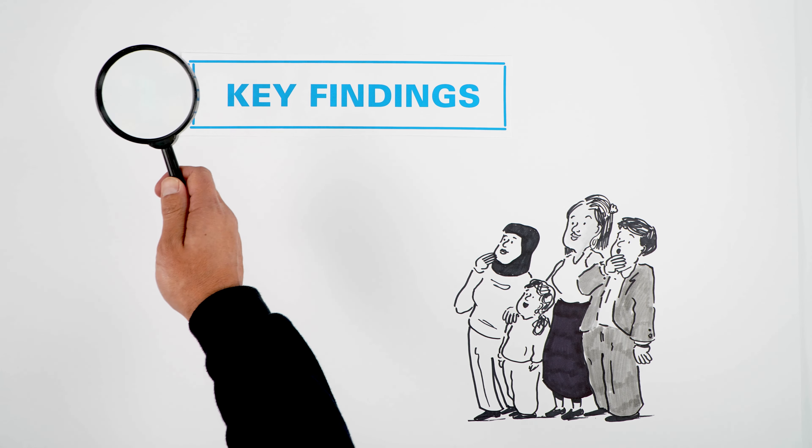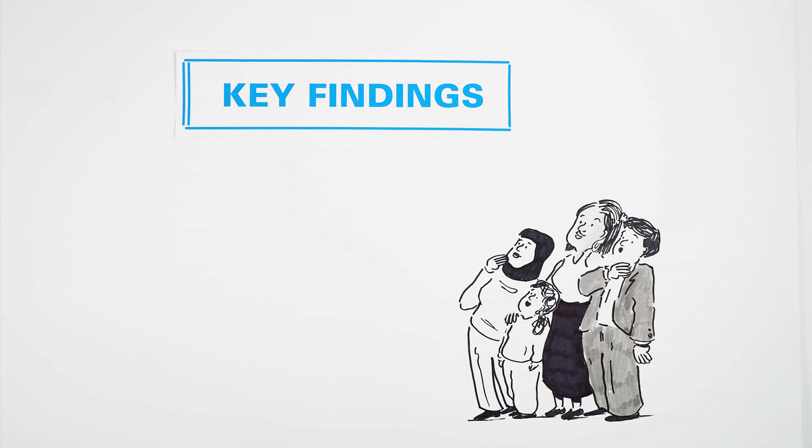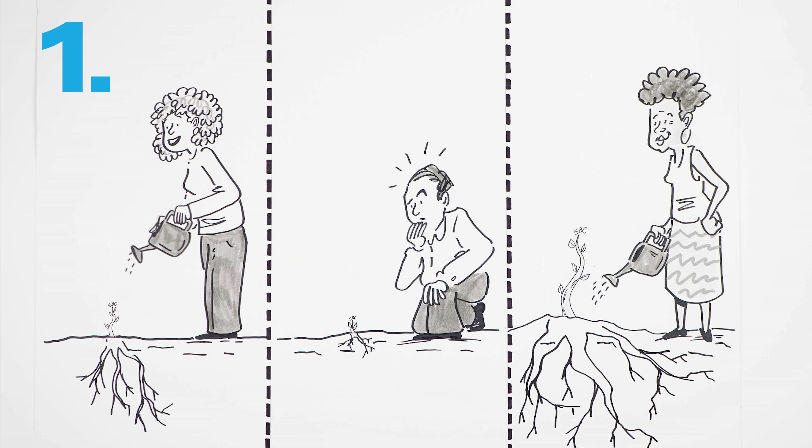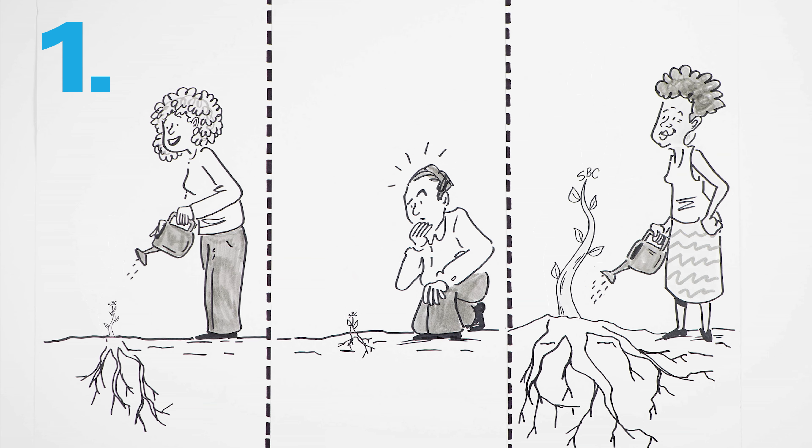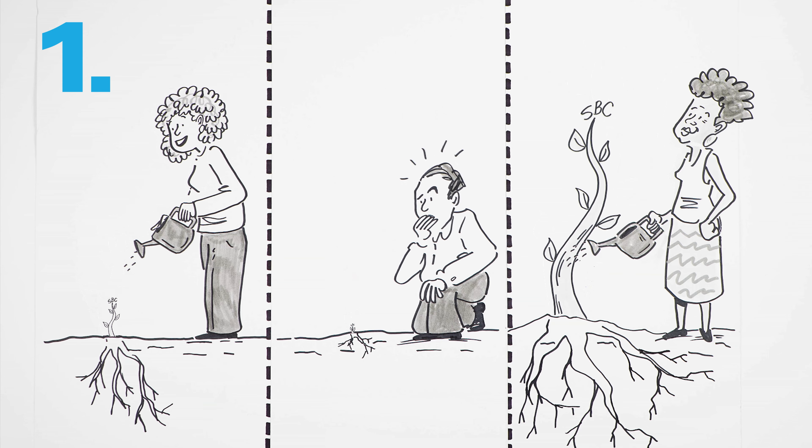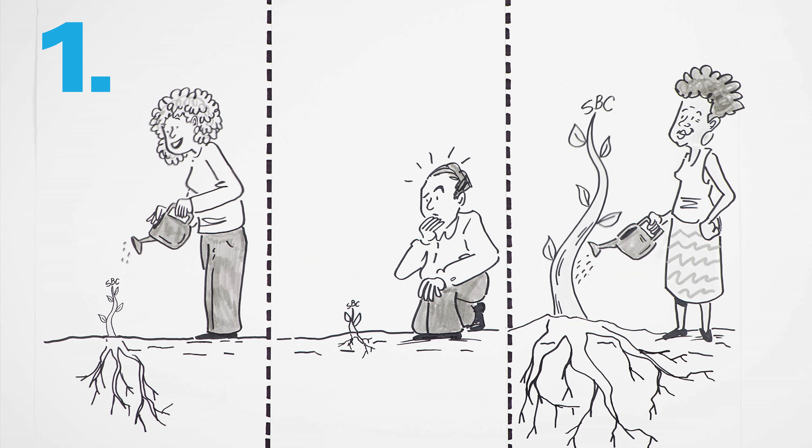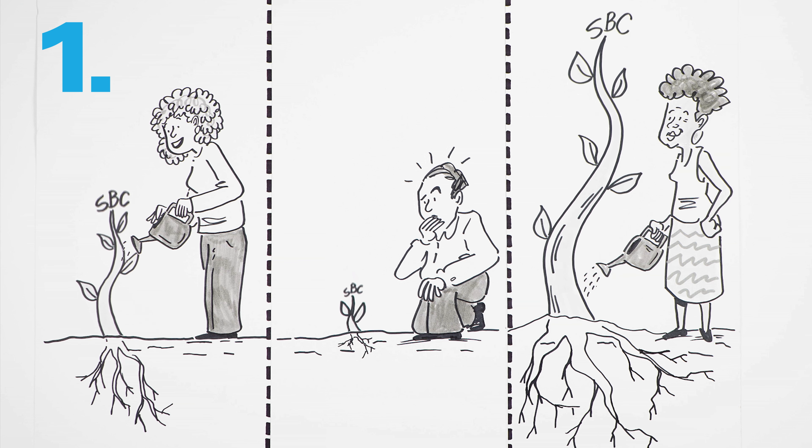And here are the three key findings of the evaluation. First, UNICEF's SBC capacity has improved significantly. However, there are discrepancies across regions, countries, and technical areas, meaning that SBC is strongly integrated in some places, but much less in others.